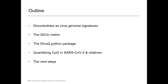I'm going to start off by explaining why dinucleotides are important genomic signatures, especially in viruses, which is what I work on. I'll go through the mathematics of the metric, explain how you can use it in the Dinuc Python package — mostly about genomic compositions — and then go into some applications, including key applications in SARS-CoV-2 and some of its relatives.